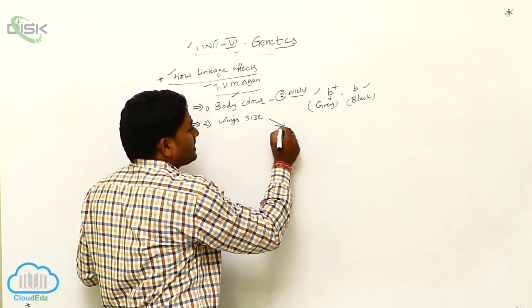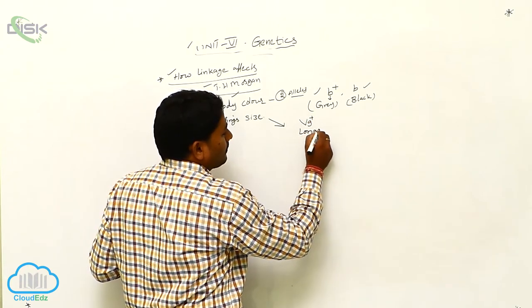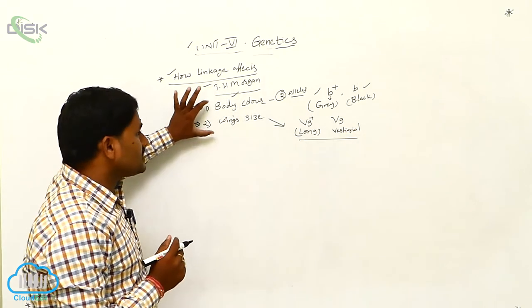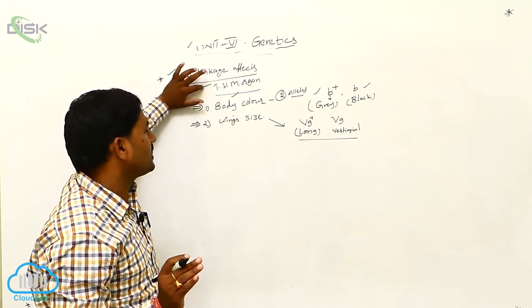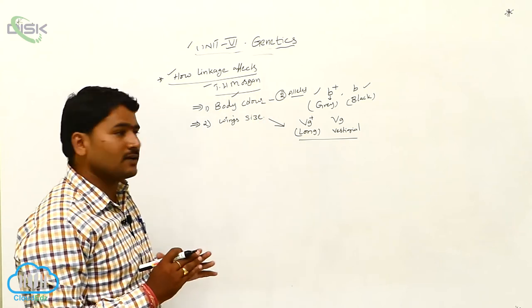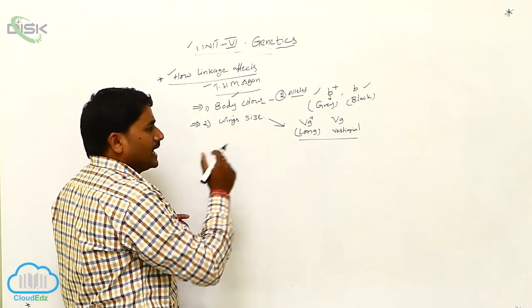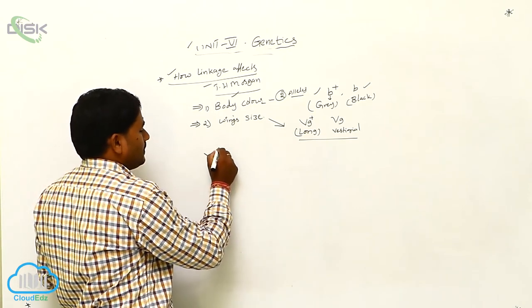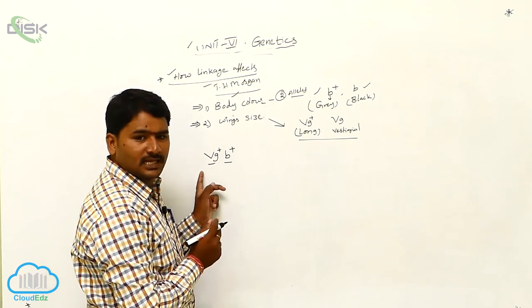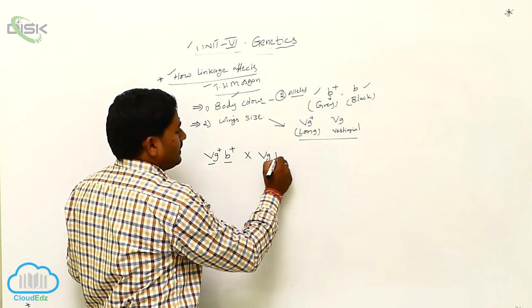For wing size, there are two alleles: VG+ (long wings) and VG (vestigial wings). Morgan wanted to know whether these two characters — body color and wing size — are genetically linked or not. So he crossed individuals and observed the F1 generation. He took a long-winged gray individual (VG+ B+) and crossed it with a vestigial black-winged individual (VG B).